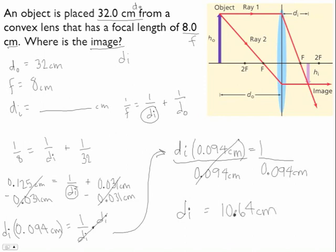And then we will have di equals 1 divided by 0.094 and you're going to get 10.64 centimeters. Now we don't know how to draw ray diagrams yet, but if you look, they've drawn a ray diagram up here, and you can see that this is your object and this is your image. You can see that your image is closer than the object, so that gives you an idea that this is at least in the ballpark of what you're looking for. So that's how to get the image distance.